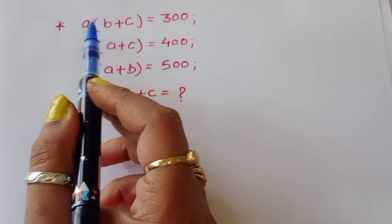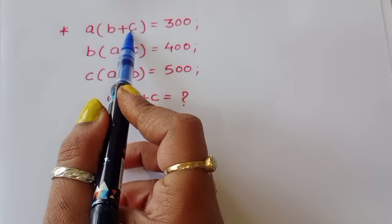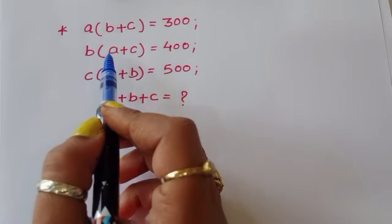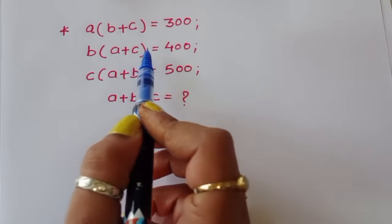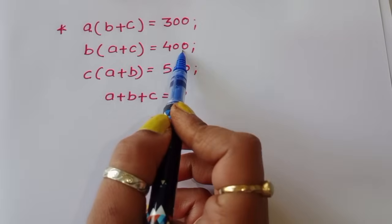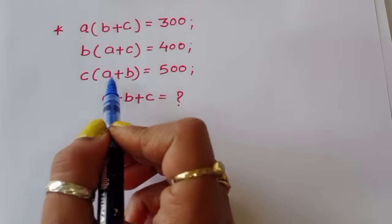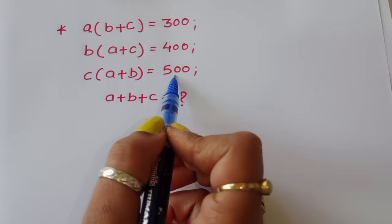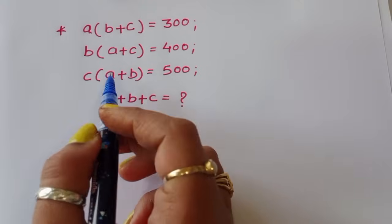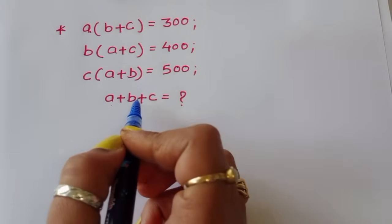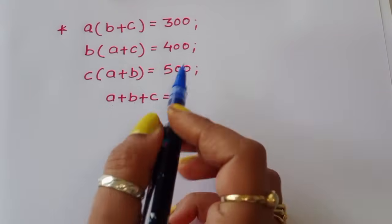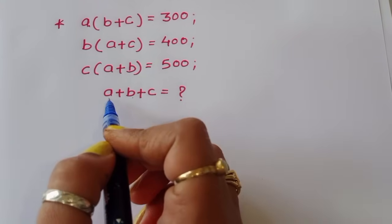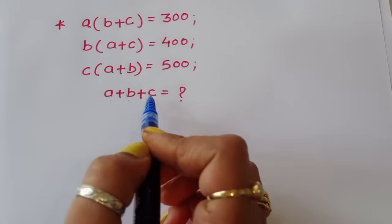The problem is given: A times B plus C is equal to 300; B times A plus C is equal to 400; C times A plus B is equal to 500. We have to find out the value of A plus B plus C.